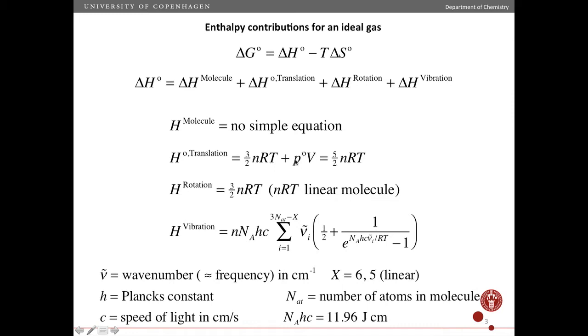Then we have the pressure volume term. If the pressure is one bar, then we put this superscript circle here to indicate that it's standard. For an ideal gas, PV is equal to nRT. So, three halves nRT plus nRT is five halves nRT. That is the equation for the translational enthalpy.